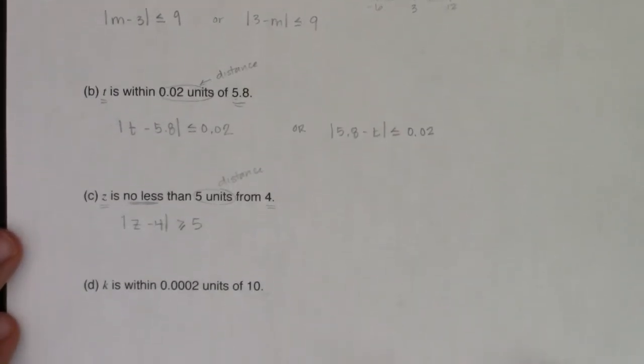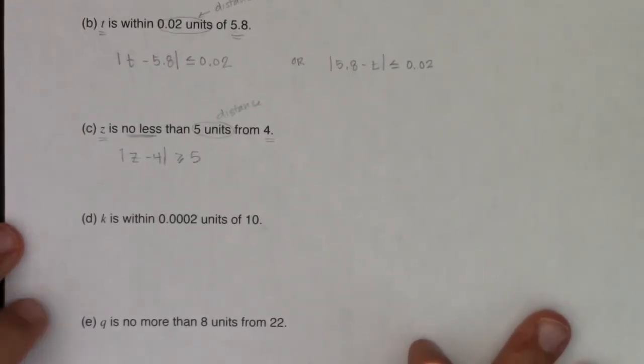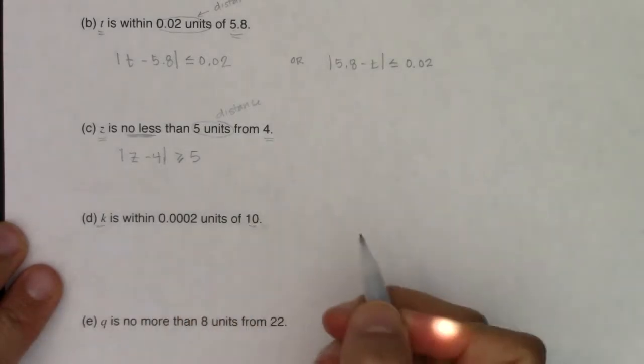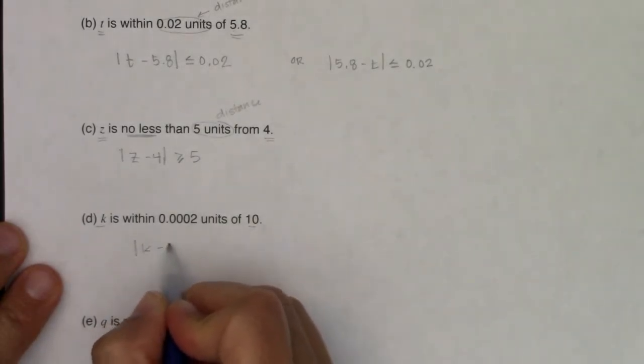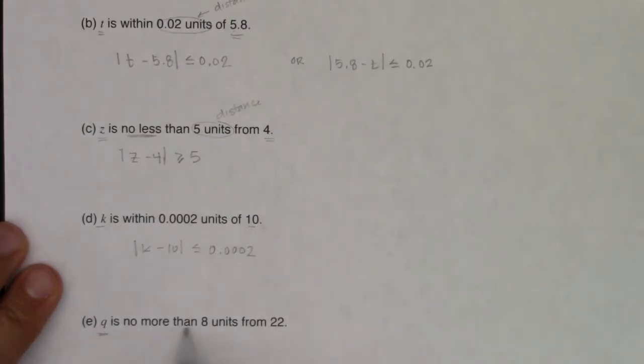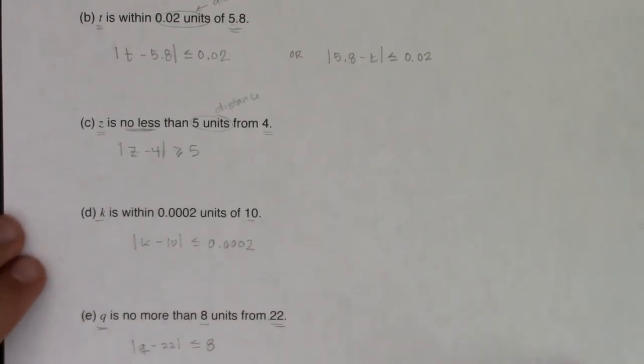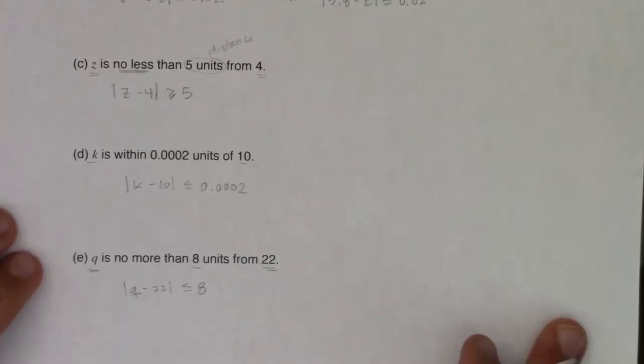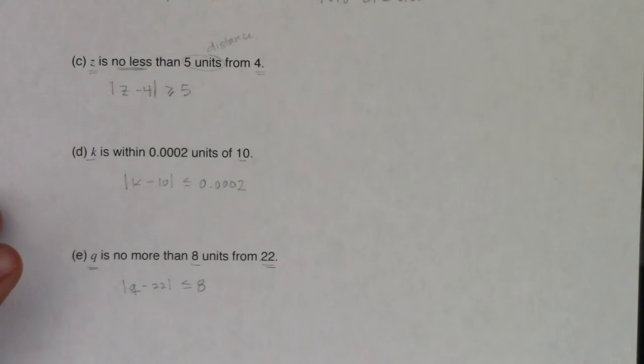Let's practice these last two, see if we can get them written up as absolute value inequalities. k is within some distance of 10. So we will have the absolute value of k minus 10 has to be less than or equal to 0.0002. And then we have q is no more than eight units from 22. So it looks like q and 22, and they want to be less than or equal to eight units away.